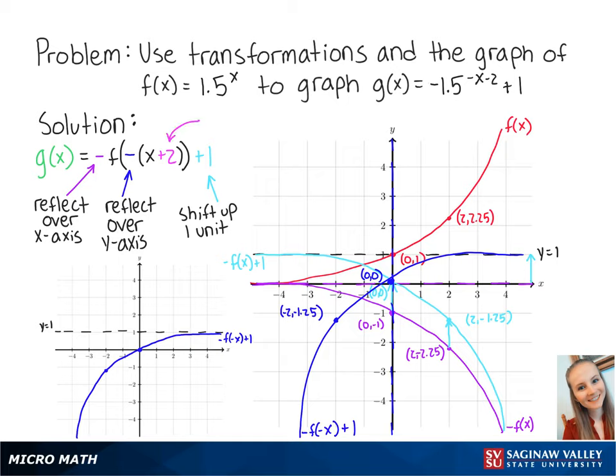Adding 2 to x means that we will shift our new graph to the left by 2 units. So our new points are at (-4, -1.25) and (-2, 0). Connecting these points, we get the graph of g of x. This is the final answer.